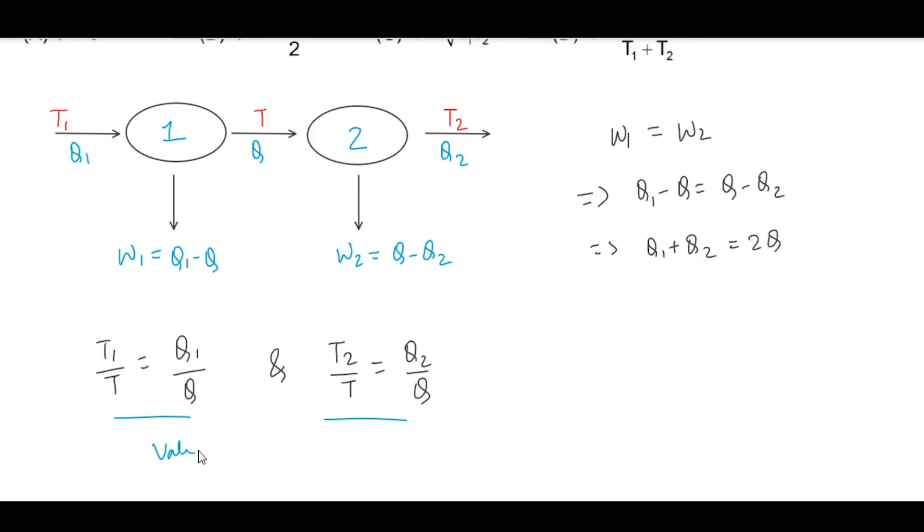For all Carnot engines, these relations are valid. Dividing both sides by Q, we get Q1 by Q plus Q2 by Q is equal to 2. Substituting both values: T1 by T plus T2 by T is equal to 2.